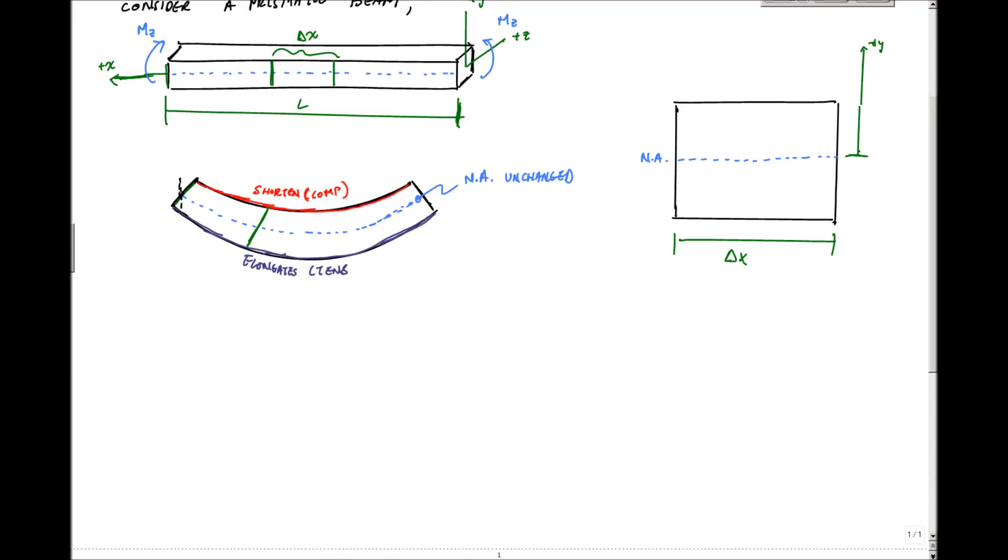And here we want to look at or study a segment right here. This line segment right here, above the neutral axis at a distance Y. It has an initial width delta S, or initial length of delta S, this segment here. And I want to know what happens to it after I deform it. And I deform it, and I look at the same segment here.